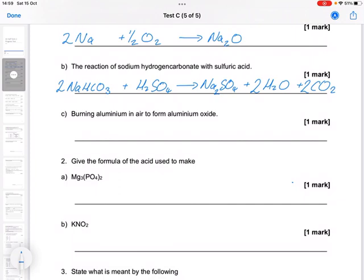Okay, part C, the burning of aluminium in air to form aluminium oxide. So aluminium oxide, aluminium is in group 3, oxygen is in group 6. So 3 plus and 2 minus, which means it's 2 and 3. And then, aluminium using the oxygen in air.